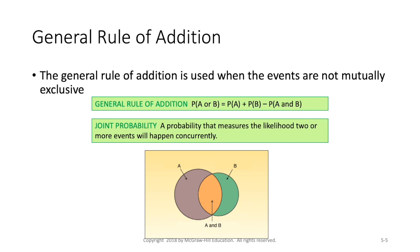So the second rule of addition is called the general rule of addition. And the reason this one is different is because our events are not mutually exclusive. We have what is called joint probability, a probability that measures the likelihood that two or more events are going to happen concurrently. So now looking at this Venn diagram, the purple over here was event A occurring. The green was event B occurring. But then right here in the middle, this kind of coral color, is where A and B both happen.